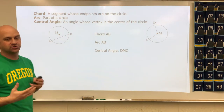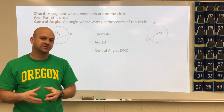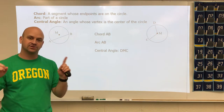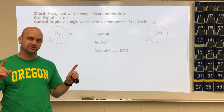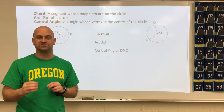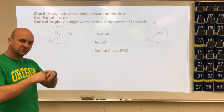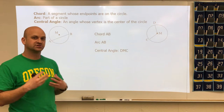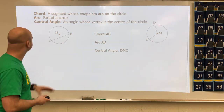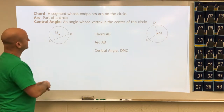One chord we already know of — we just didn't call it a chord — is a diameter. A diameter has two endpoints on the circle but is a special chord that passes through the center of the circle. All other chords are just called regular chords.